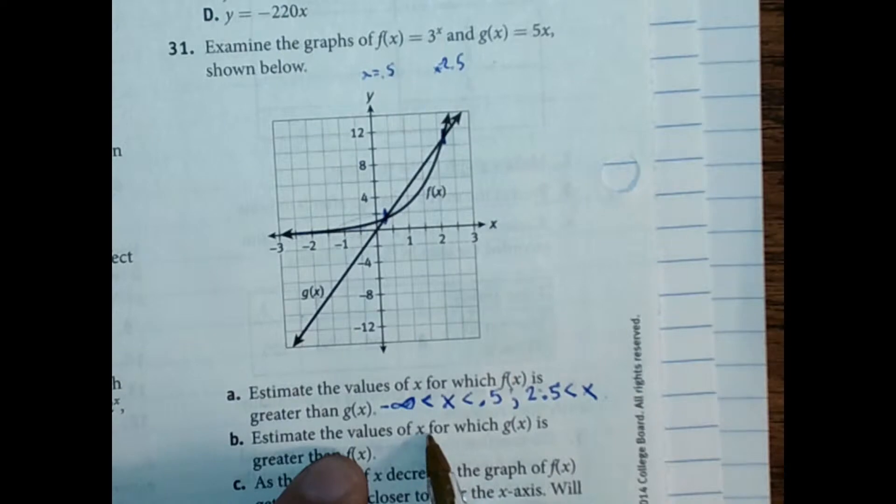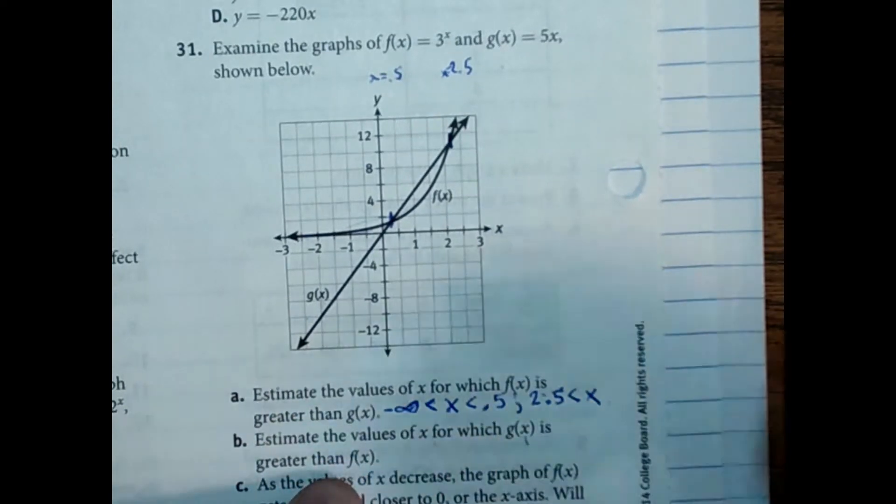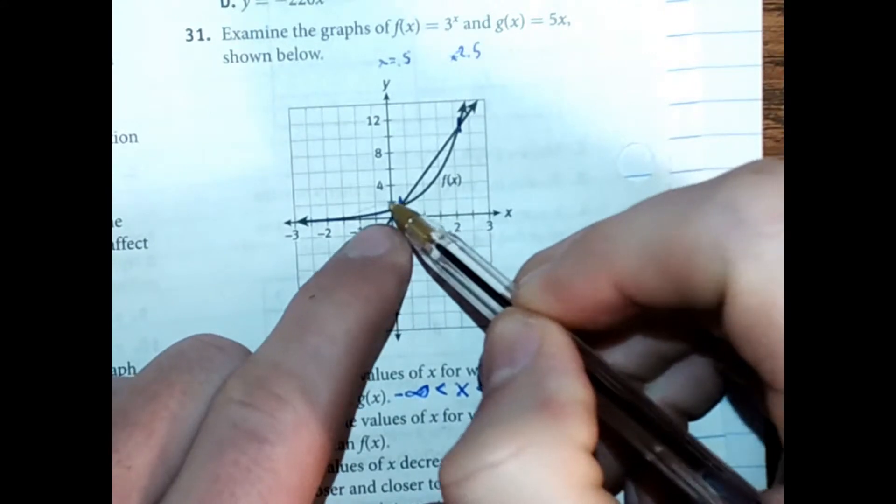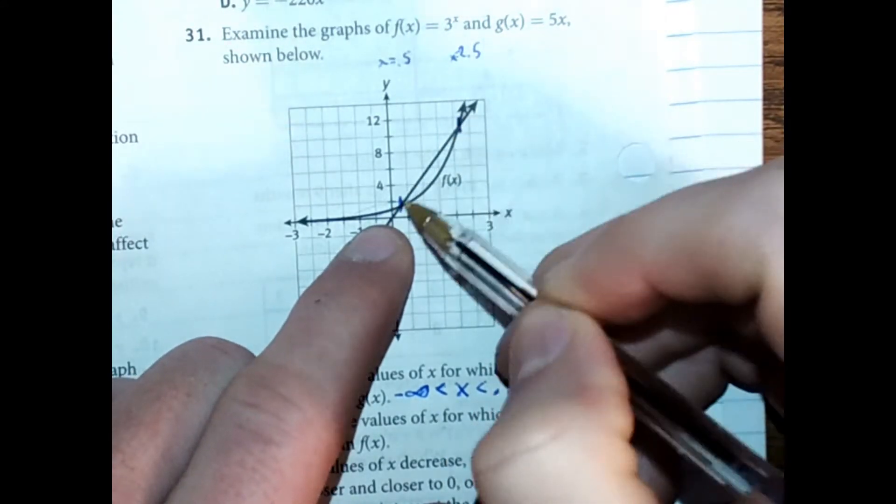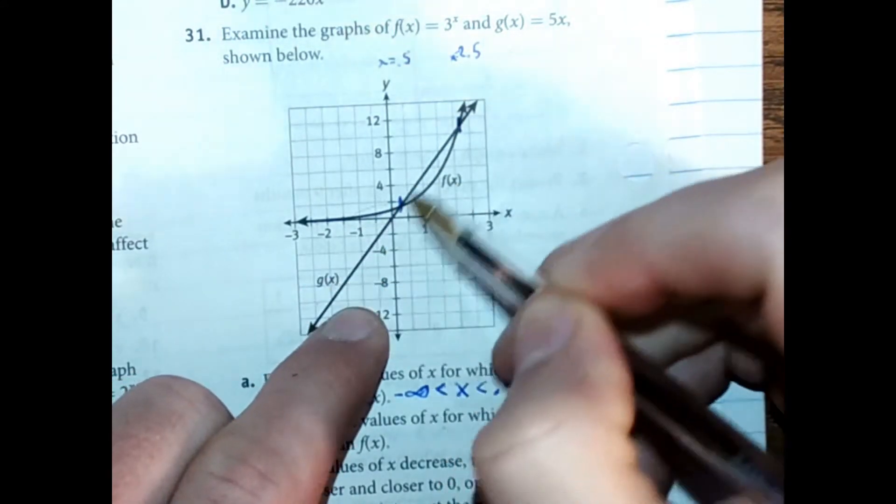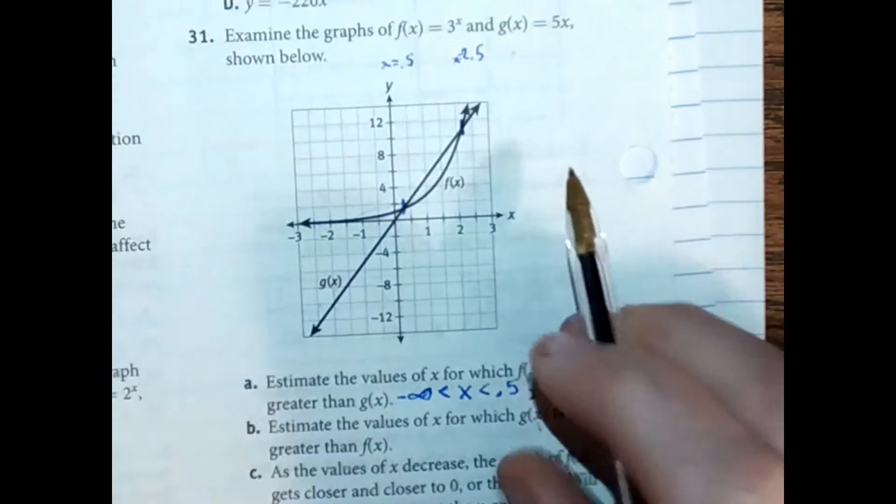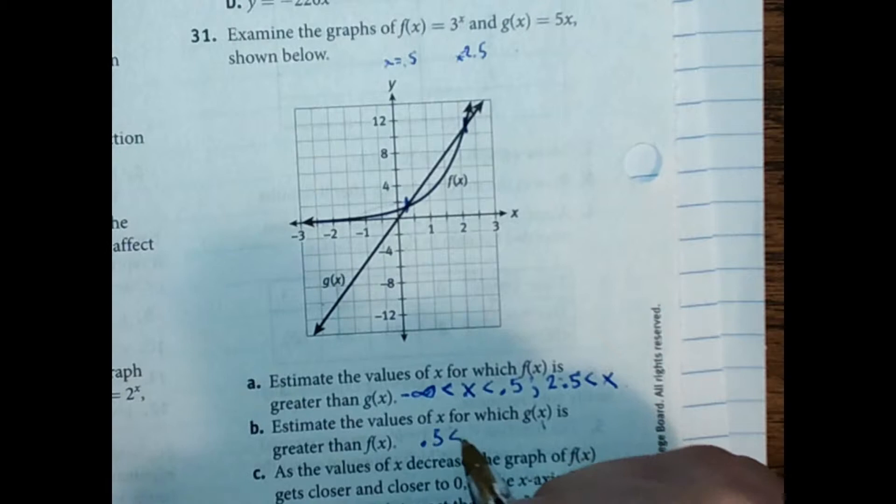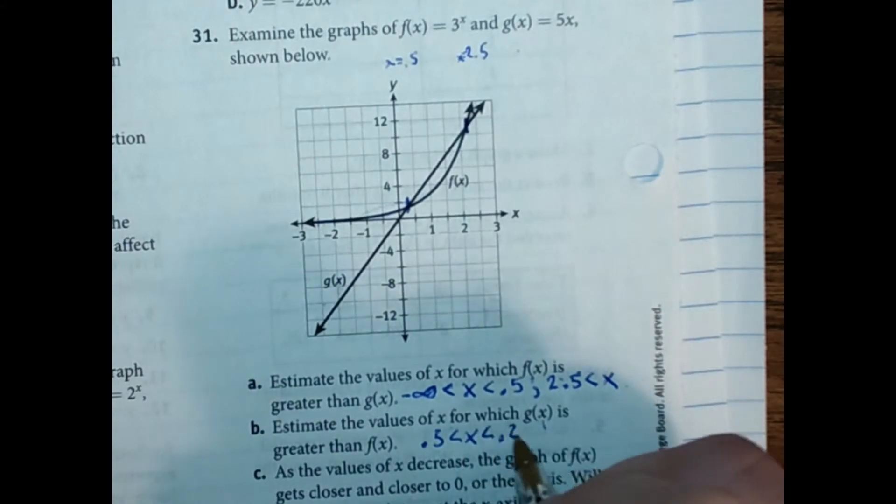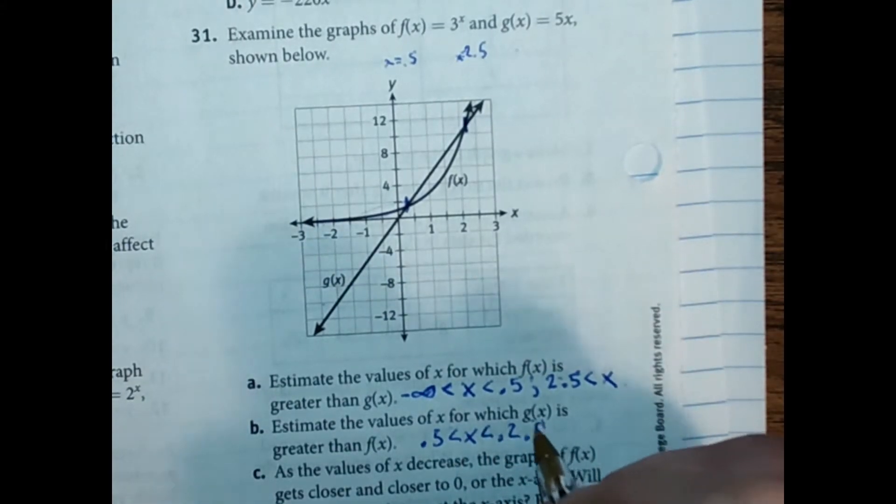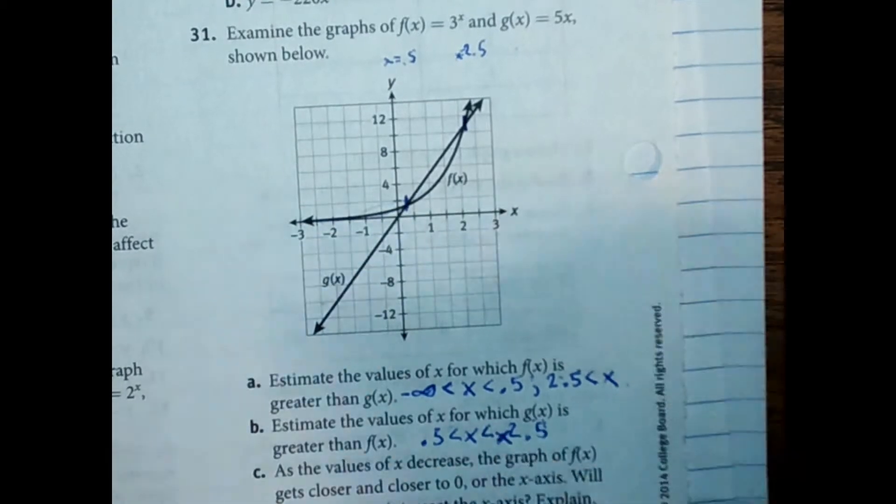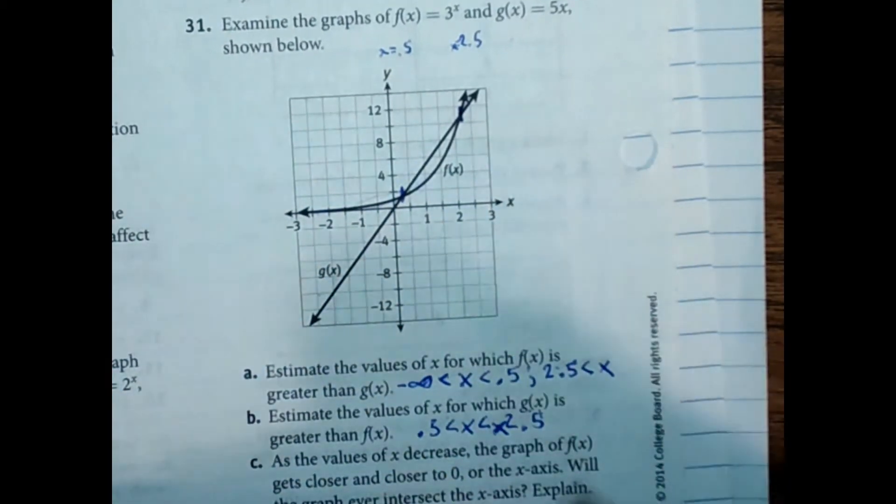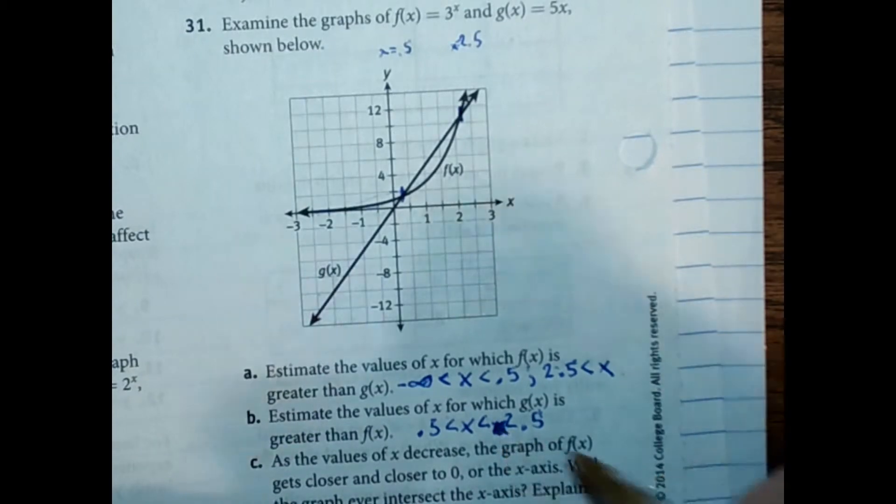And then for what values of x for which g of x is greater than f of x. Well, that's everything in between, right? This part where the straight line is above the curve is the only place that the function g of x is greater than the function f of x. So with inequality notation, we could say between 0.5 and 2.5. But again, inequality notation is fantastic. If you could just write me a little sentence, I'd accept that too.